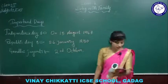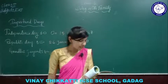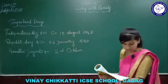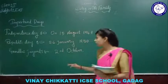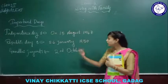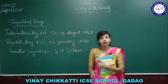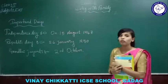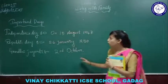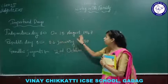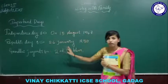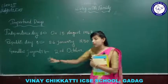Gandhi Jayanti is celebrated every year on 2nd October — it is the birthday of Mahatma Gandhi, the father of the nation. He was an important leader who helped us gain freedom from British rule, along with other freedom fighters like Chacha Nehru. To summarize the dates: Independence Day is 15th August 1947, Republic Day is 26th January 1950, and Gandhi Jayanti is 2nd October.